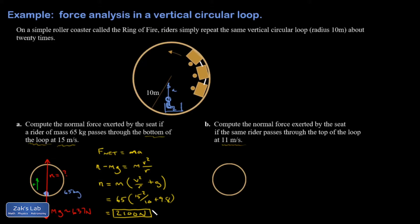All right, so things change when the rider gets to the top position. Again, that's 65 kilograms. And, of course, the weight is always pulling down. I don't have to write the number for that again. And the normal force, provided the rider is going fast enough, the seat is still pressing